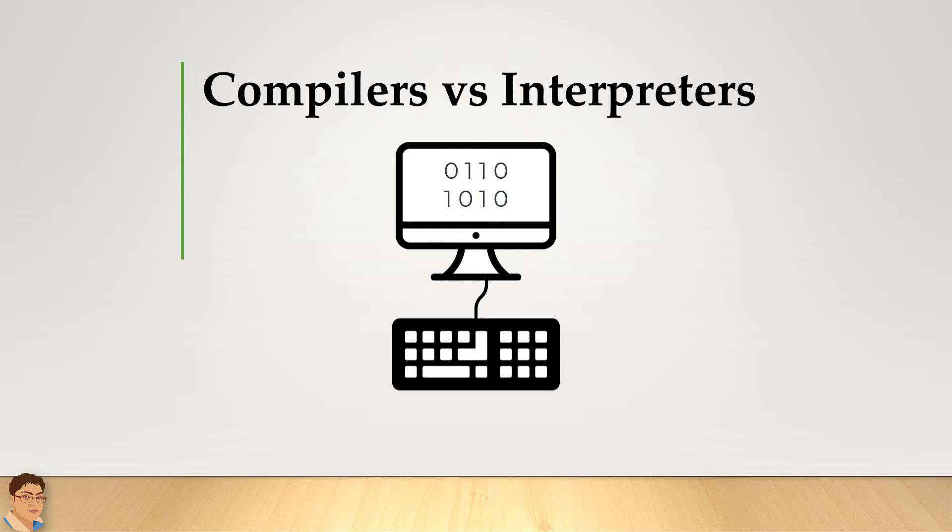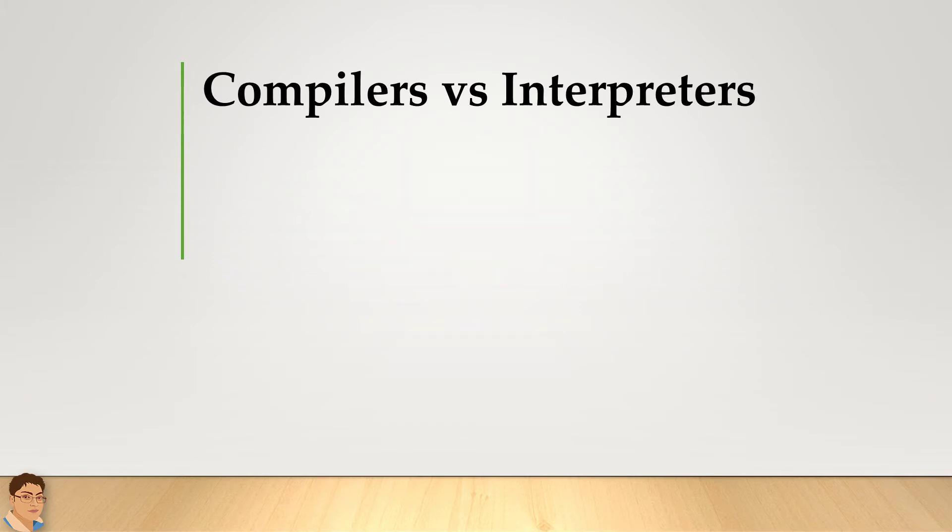So to execute a program written in a high-level language, the source code needs to be converted into machine code. There are generally two different ways a program can run. It can either be compiled or interpreted.